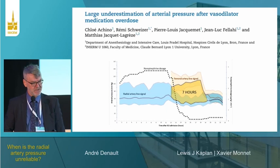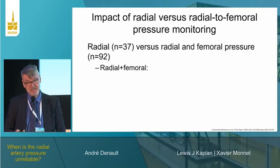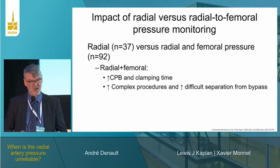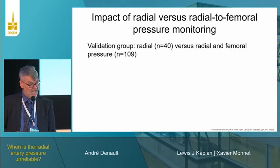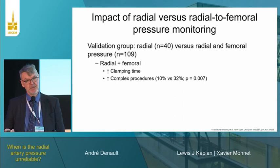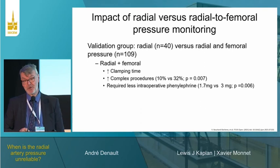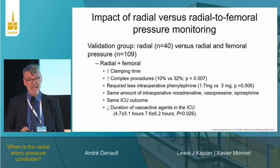What is the impact? In our study, we compared patients who had radial-only versus radial-plus-femoral artery pressure monitoring. Patients with both lines had longer bypass periods and more complex procedures. However, compared to the radial-only group, they required less phenylephrine and the same amount of noradrenaline during the case. A validation group confirmed the same observation — the radial-and-femoral group had sicker patients but required less phenylephrine, and the same amount of noradrenaline, vasopressin, and epinephrine, with the same ICU outcome.